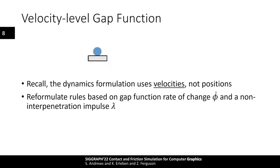We now have basic rules for when to apply non-interpenetration forces. However, our analysis was done by considering the gap function, which is a position-level quantity. While we can use this to determine if a collision exists, we need to reformulate our rules by considering the velocity — or rate of change — of the gap function. We write this rate of change as phi-dot. Since we are talking about velocity-level dynamics, let's use a lowercase lambda to denote the non-interpenetration impulse, and assume two bodies are just touching at the current time instant.